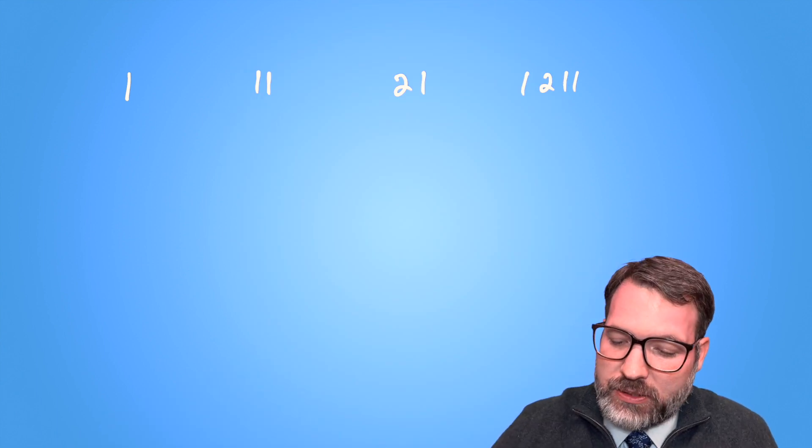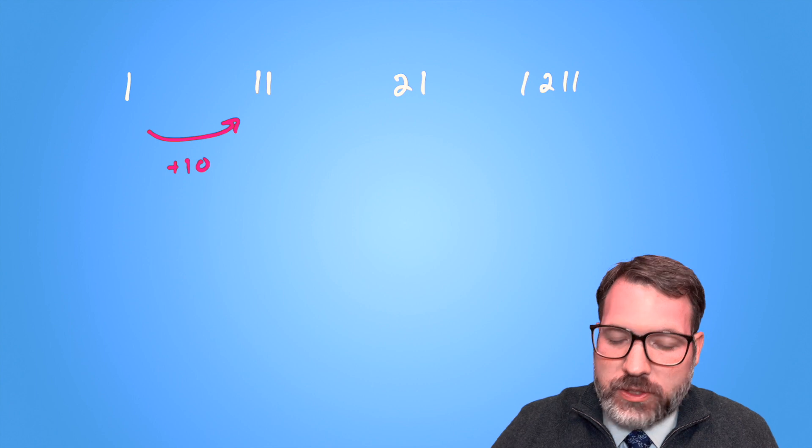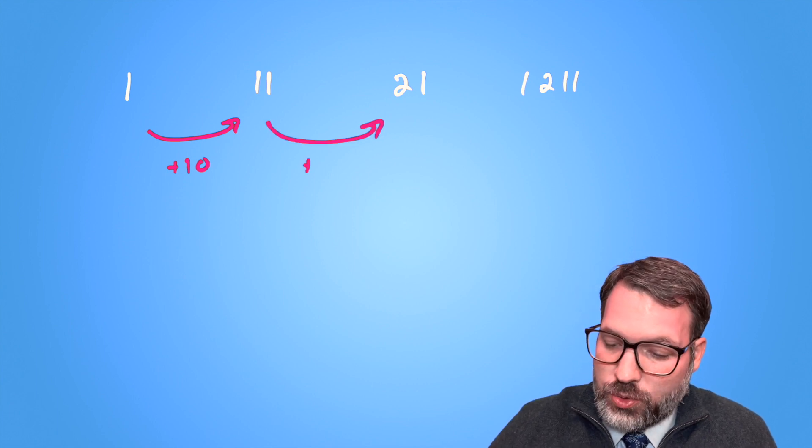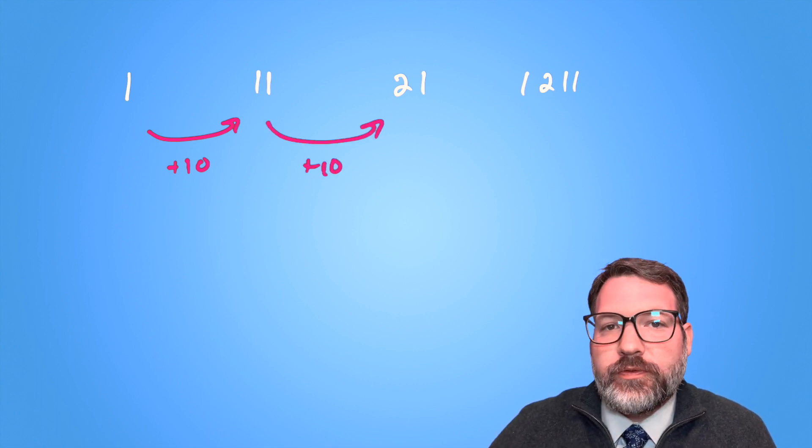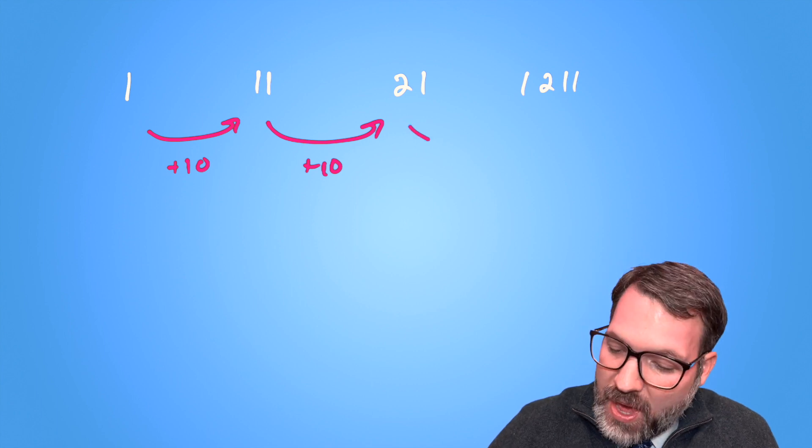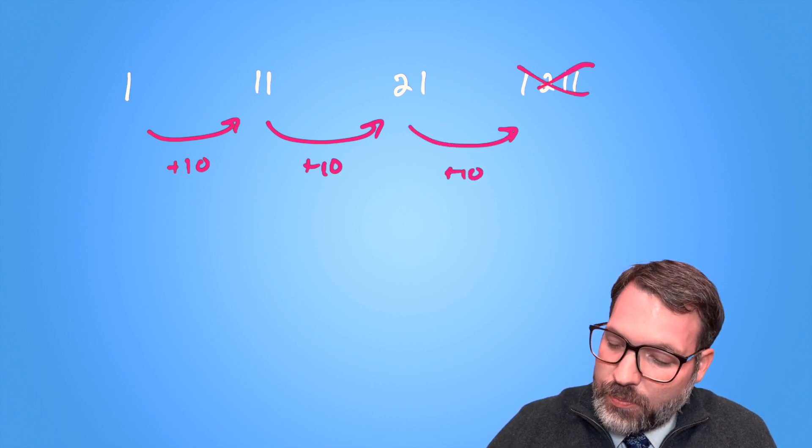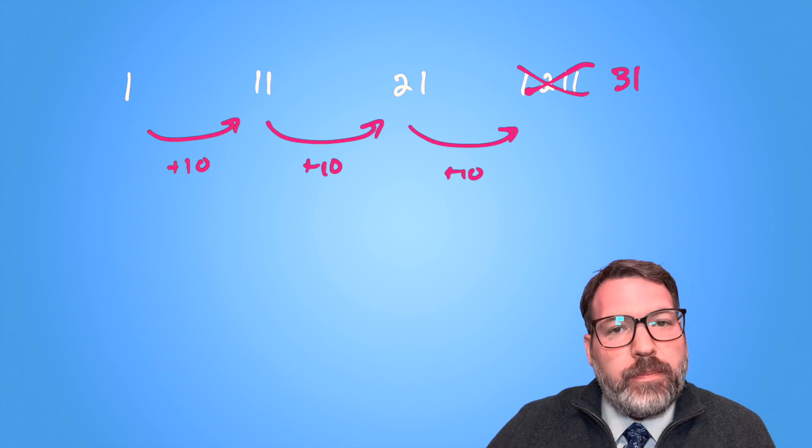You might have expected 1 to 11. Well, that looks an awful lot like we're getting bigger by 10. 11 to 21 really seems to confirm we're getting bigger by 10. Maybe the next term in this sequence is simply 10 plus 21 makes 31.